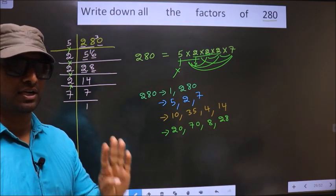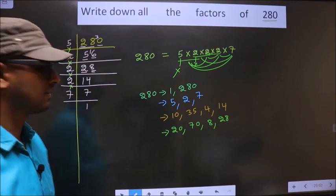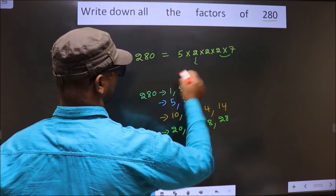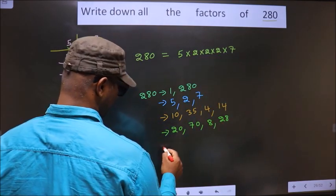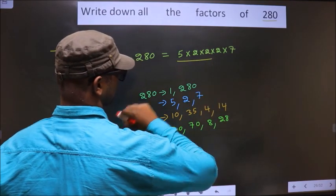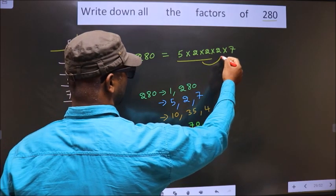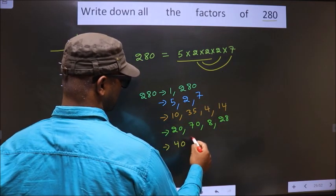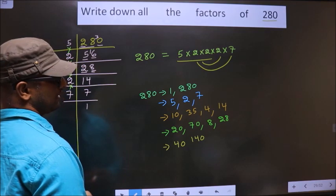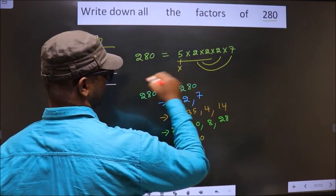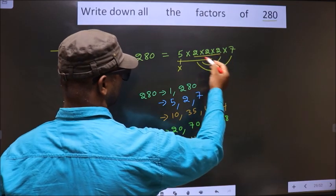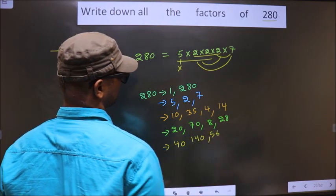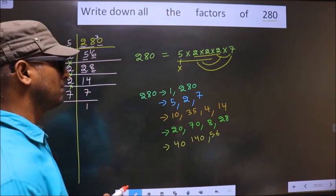Now you take a combination of 4 numbers. First I fix these 3: 5×2=10, 10×2=20, then 20×2=40. When 20 is combined with 7, that is 20×7=140. Now leave 5 and take these 3 numbers: 2×2=4, 4×2=8, then 8×7=56. So no other combination is possible.